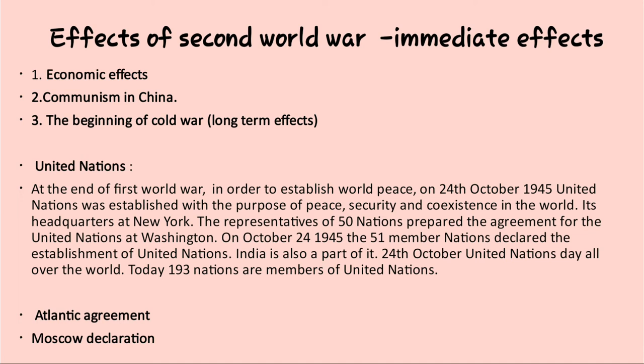Another important point is the Atlantic Agreement. American President Roosevelt and British Prime Minister Winston Churchill prepared an eight-point agreement on a ship in the Atlantic Ocean, which came to be known as the Atlantic Agreement. The main matters discussed were maintaining the freedom and sovereignty of every nation, peace, security, social and economic welfare, and disarmament. Next is the Moscow Declaration: the foreign ministers of Britain, America, Russia, and China met in Moscow for world peace, which came to be known as the Moscow Declaration.